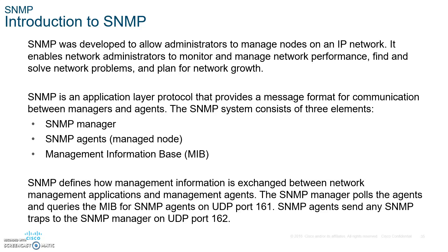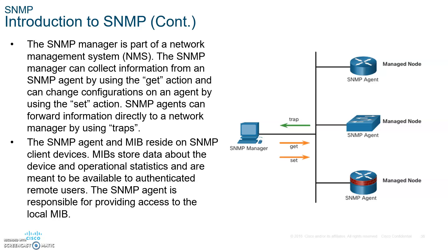The key SNMP commands are: GET — the manager collects information from agents; SET — the manager changes configuration on an agent by sending new information; and TRAP — an agent sends information to the manager unsolicited. Each agent device holds a MIB, and when the manager queries them, it grabs the information from the MIB. Agents also send traps to the SNMP manager.